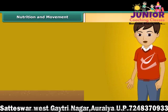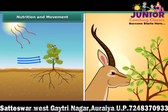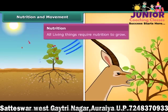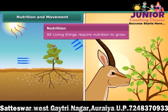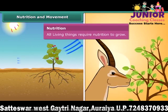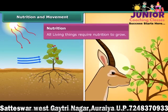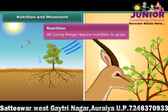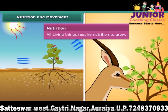Another important characteristic of living things is nutrition. All plants and animals require food to grow and survive. Plants prepare their own food by the process of photosynthesis in the presence of sunlight, whereas animals depend on plants for their food.